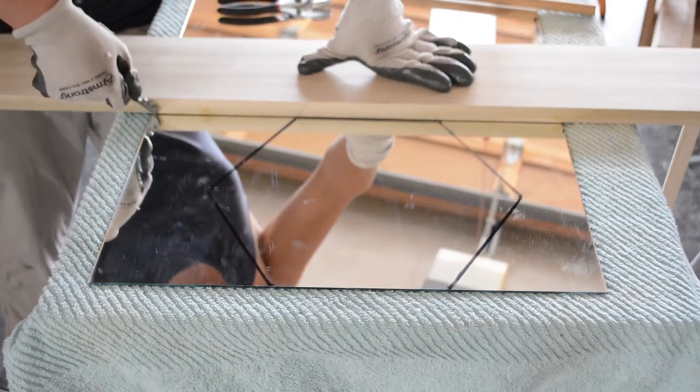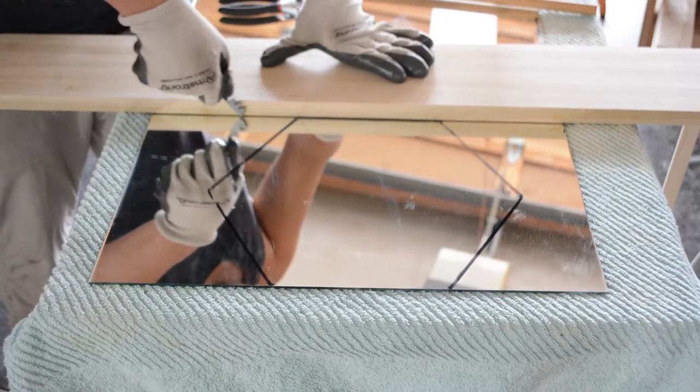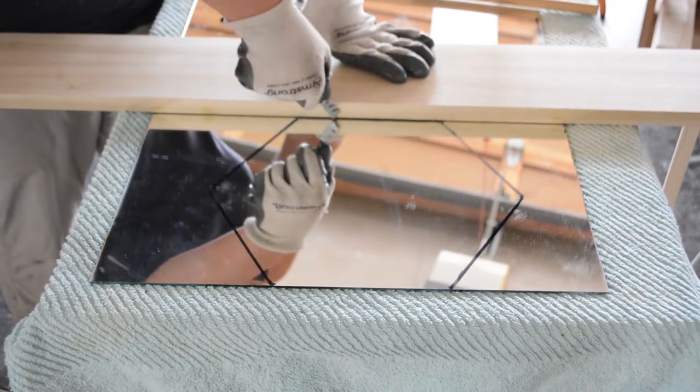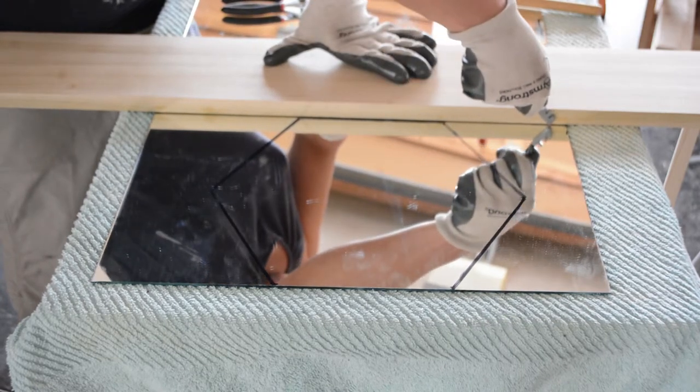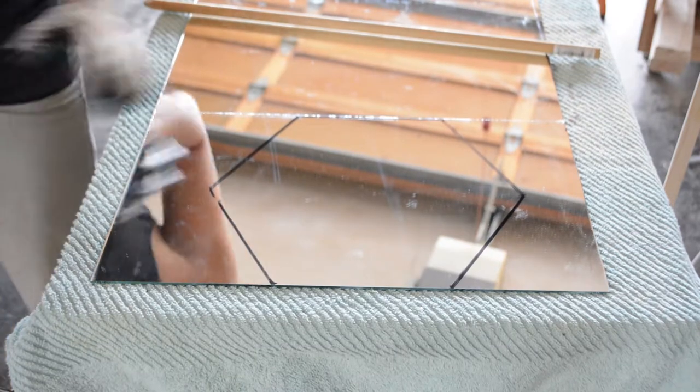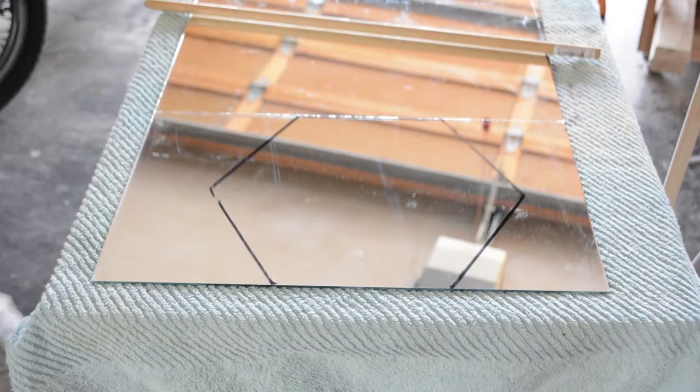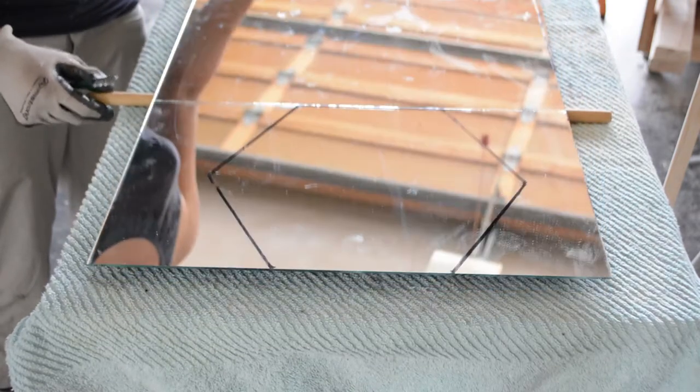Then, and this is the hard part, I start close to my body, push down hard on the cutter with my thumb and slowly trace a line forward to the other end in one motion. Only do this once and don't retrace. Then, place the scored line right over a wooden dowel, take a deep breath and push down on the mirror.